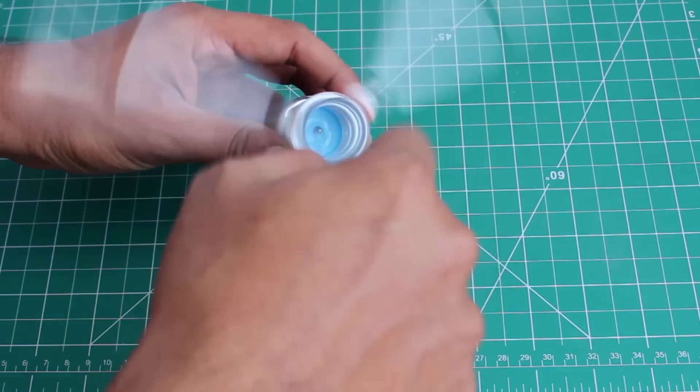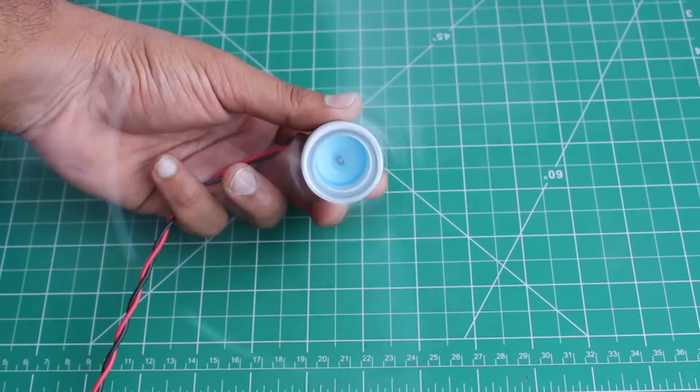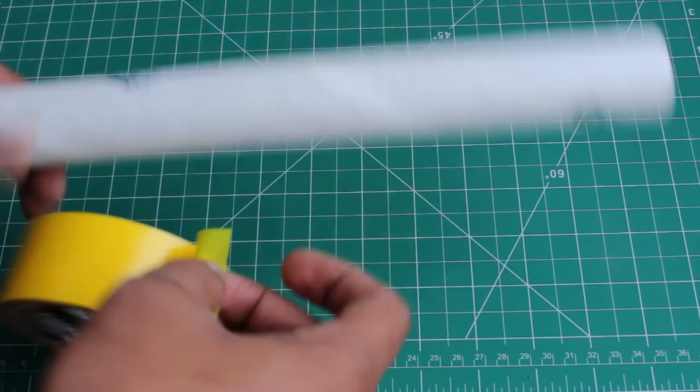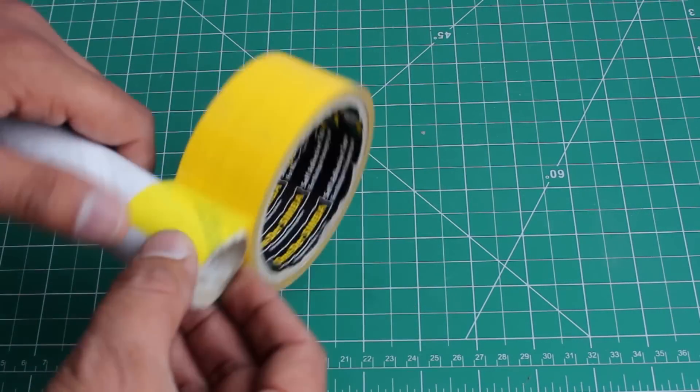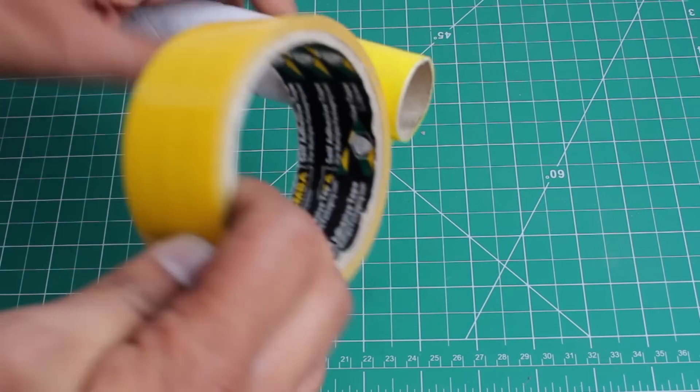Then fix the fan to the cap. Fan part is ready. Let us now make the stand for this. Take a tissue paper roll or you can use a PVC pipe. I'm using paper roll, so for extra strength I'm applying plaster over it.